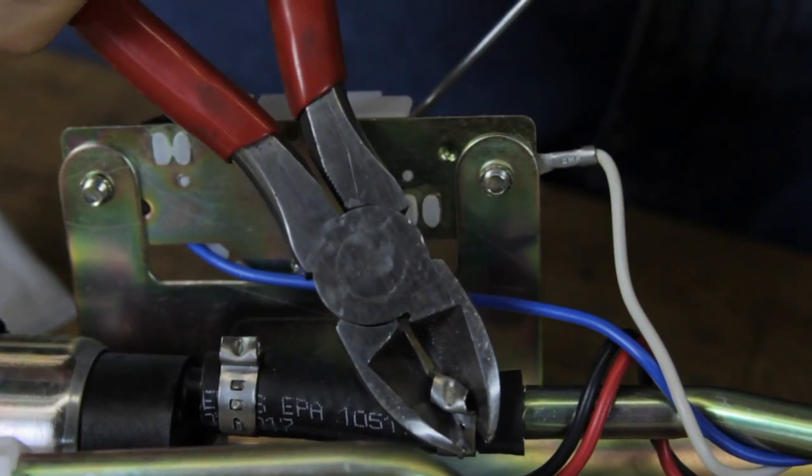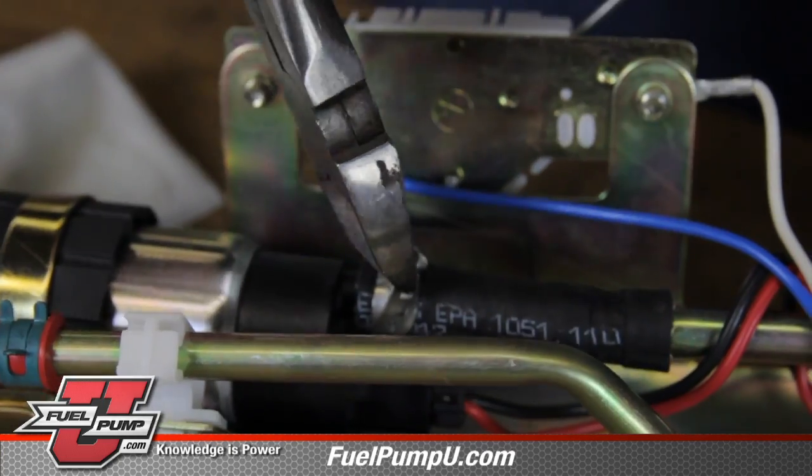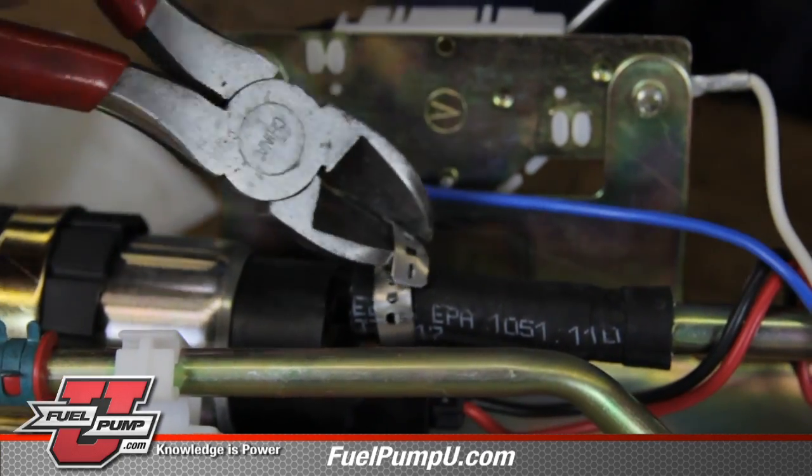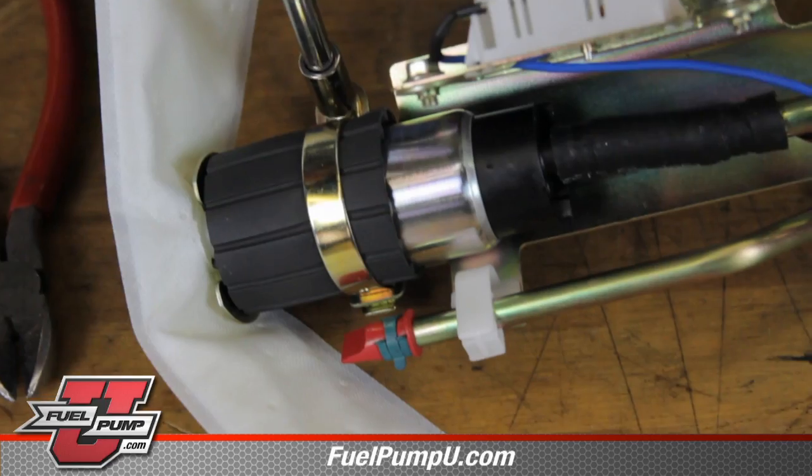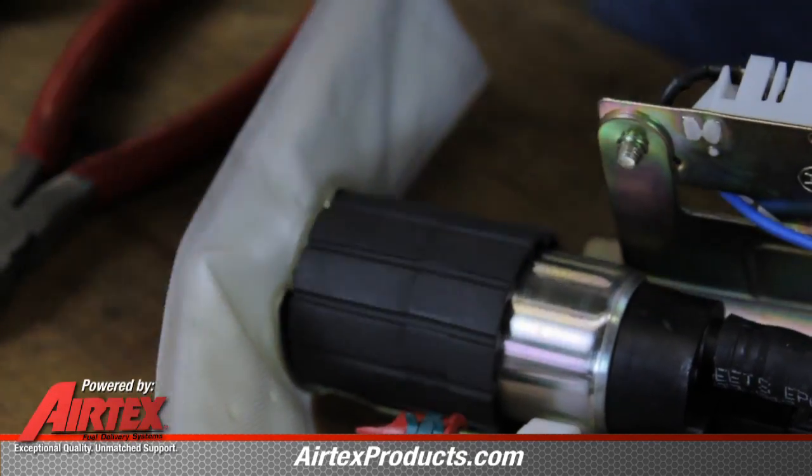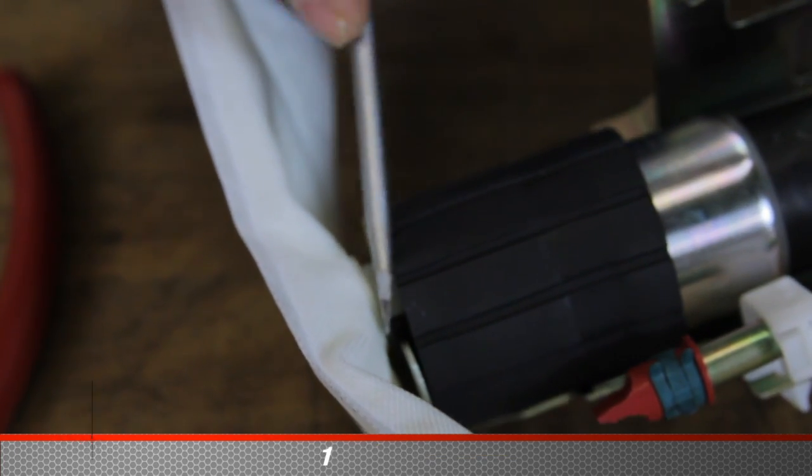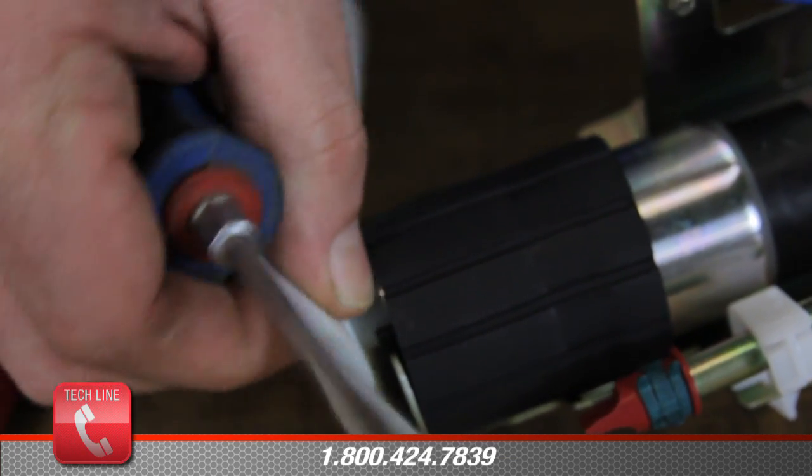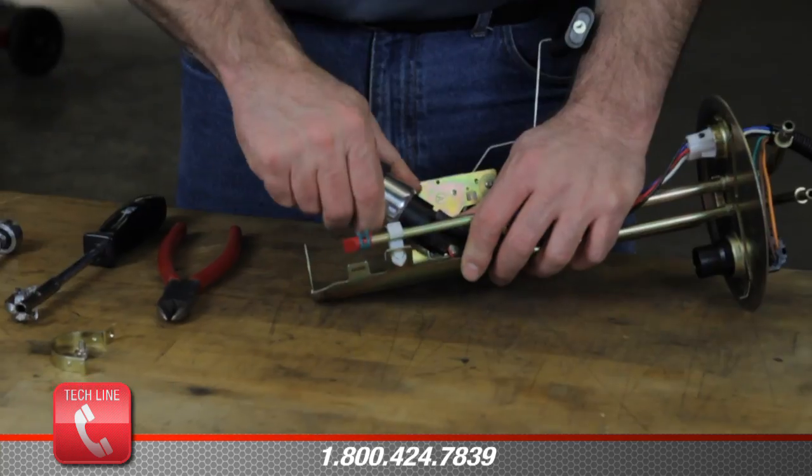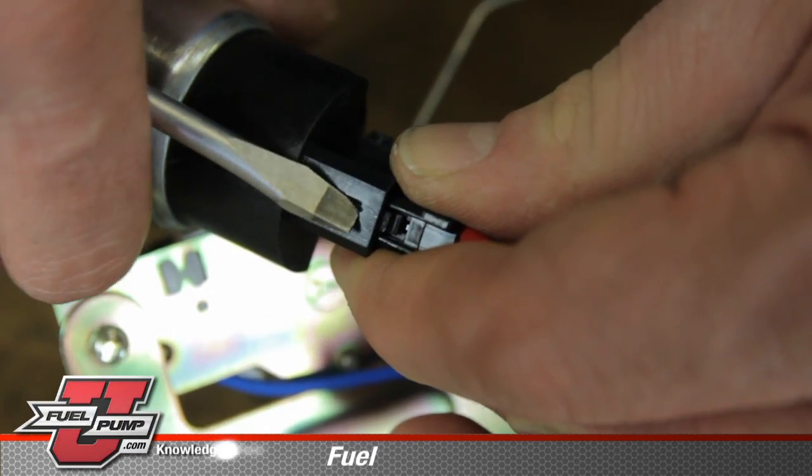First thing we need to do is remove the clamps from the fuel supply hose. Now we will remove the retaining strap. Take the strainer off. The strainer is a press fit. You have to pry it off the end of the pump. Once you've removed the strainer, now you will pull the pump out of the assembly. We're going to undo the electrical connection.